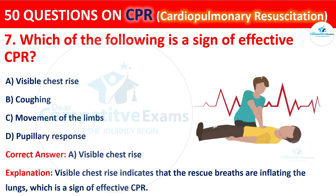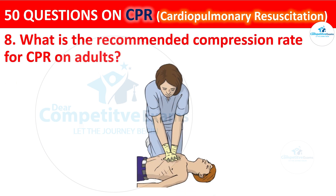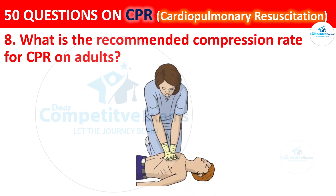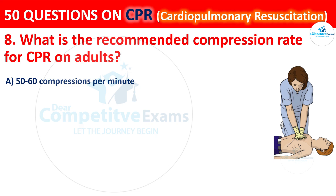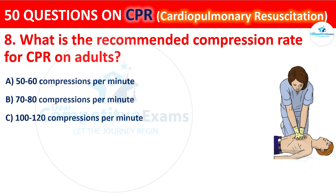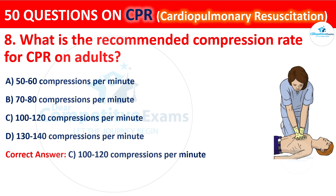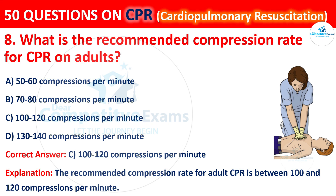Question 8: What is the recommended compression rate for CPR on adults? Your options are: 50 to 60 compressions per minute, 70 to 80 compressions per minute, 100 to 120 compressions per minute, or 130 to 140 compressions per minute. The correct answer is C: 100 to 120 compressions per minute. The recommended compression rate for adult CPR is between 100 and 120 compressions per minute.